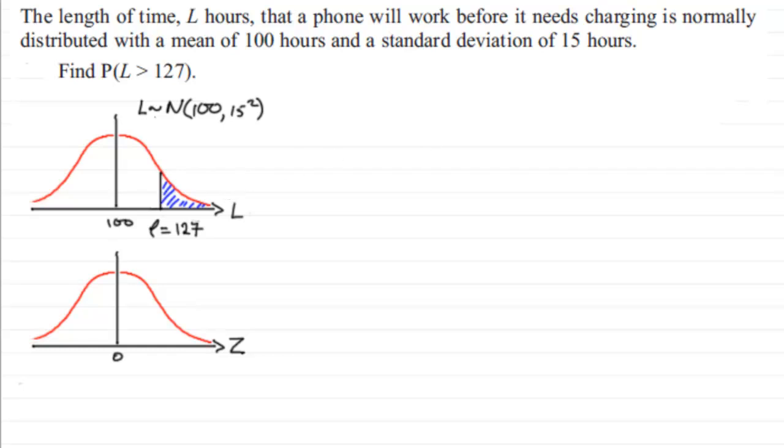And to do this, I then have to work out what the corresponding Z value is for that observed value. So we'll just call that, say, Z1. And once I've got that value for Z1, the probability is given by the area to the right of Z1.